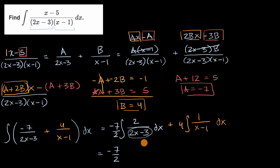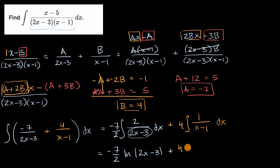The antiderivative of one over x is the natural log of the absolute value of x. So the antiderivative here is the natural log of the absolute value of (two x minus three), giving negative seven halves times ln|two x minus three|. For the second part, the derivative of (x minus one) is one, so we get plus four times ln|x minus one|. And since we're taking an indefinite integral, we must not forget our plus C.